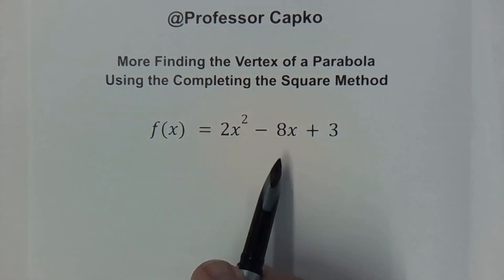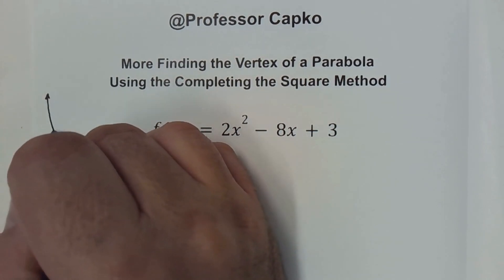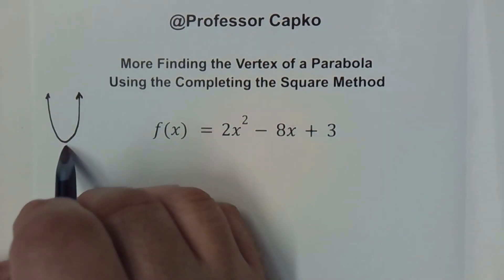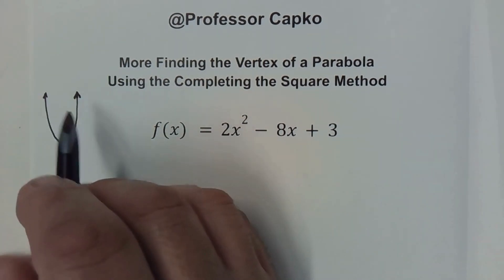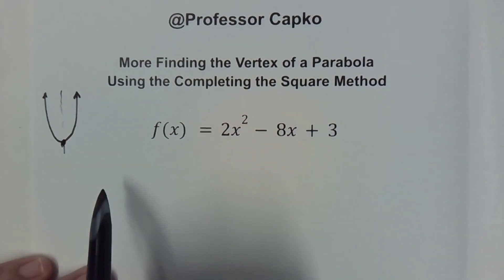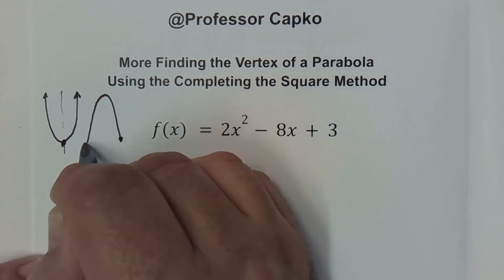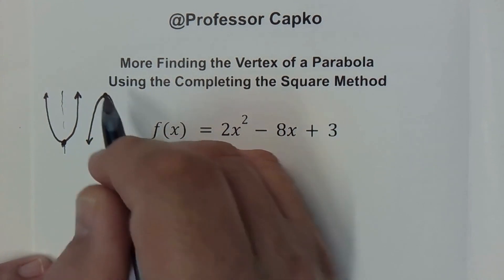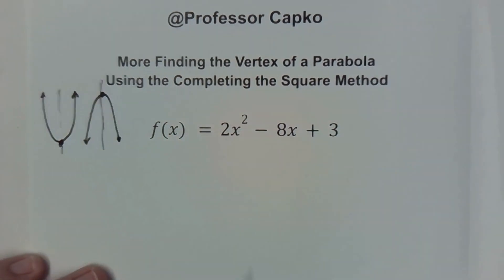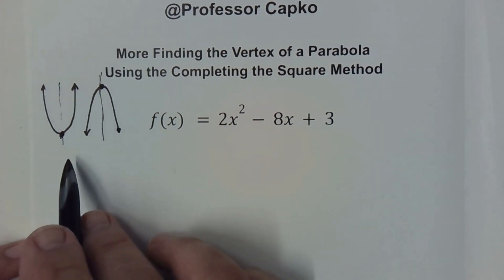All right in today's video we're going to find the vertex of a parabola. A parabola looks something like this, opening up and the vertex would be the lowest point right there. If we drew a dotted line through the vertex it would be a mirror image on either side. Likewise a parabola could open downward and the vertex would be the highest spot. So that is the vertex, we're looking for either the lowest point or the highest point.